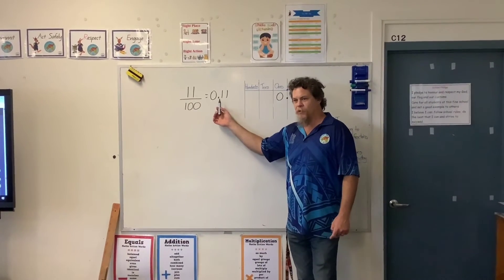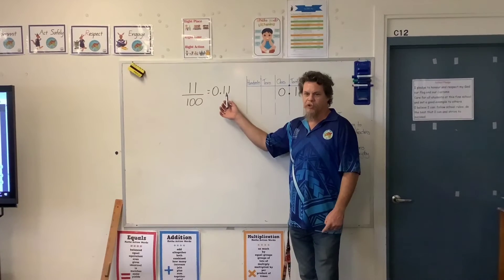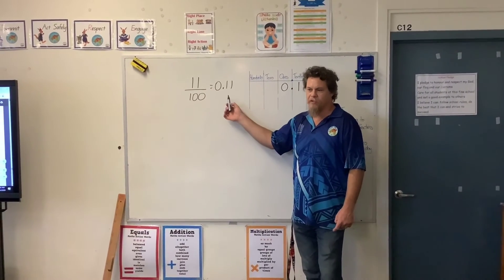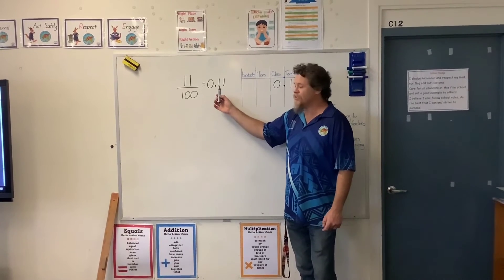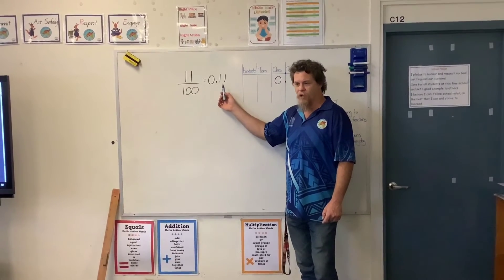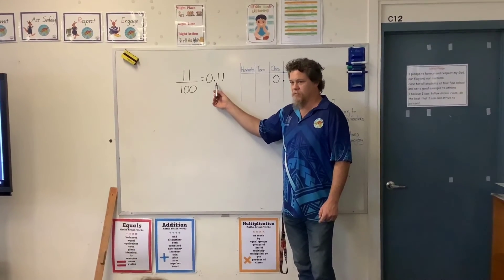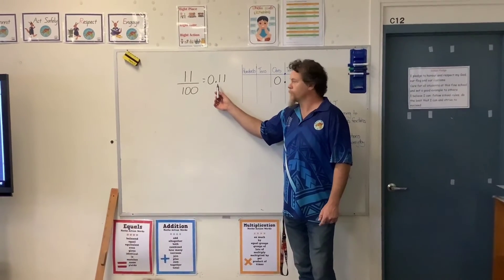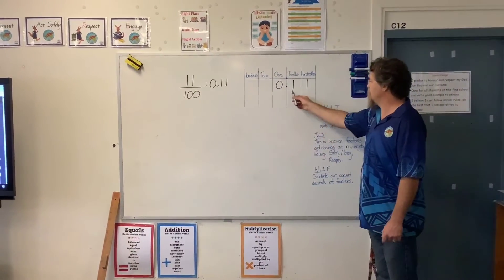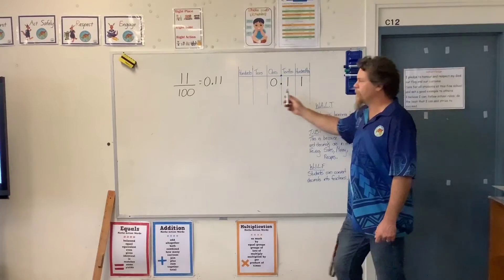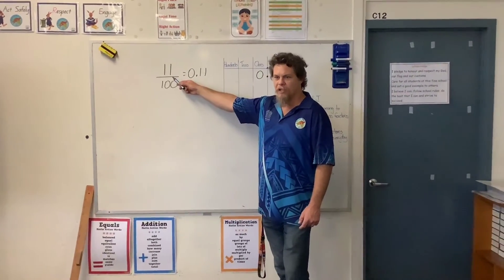This is really important: when you have a decimal like that, you read it properly, because later you're going to convert decimals back to fractions, and if you read it correctly it becomes very simple. It is not 'zero point eleven.' It's just 11 hundredths, which means you can read it as 11 hundredths, and if you read that correctly, it becomes really simple to write it as a fraction. We'll do that later.